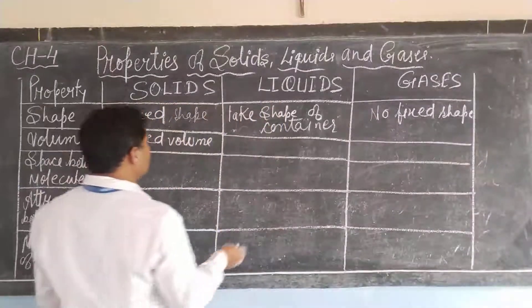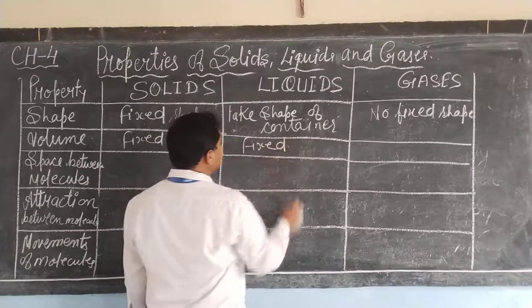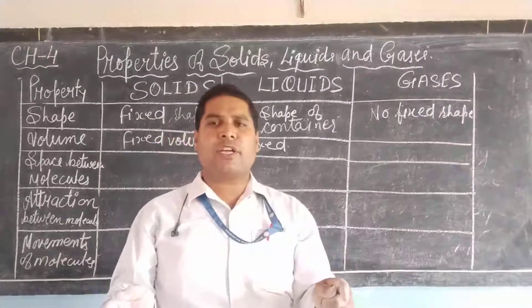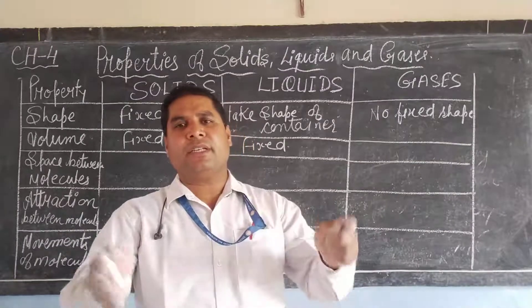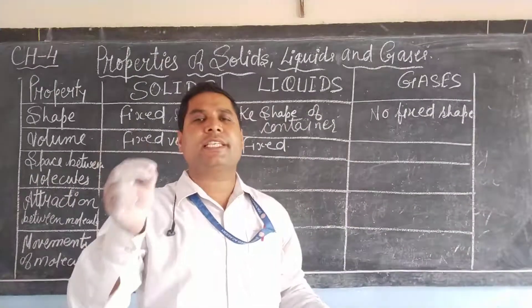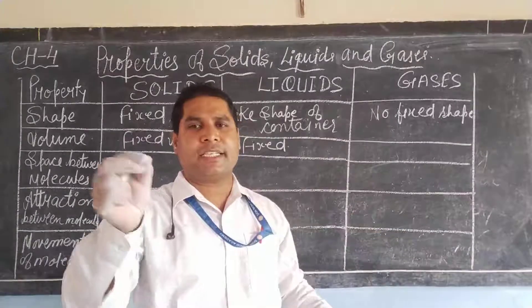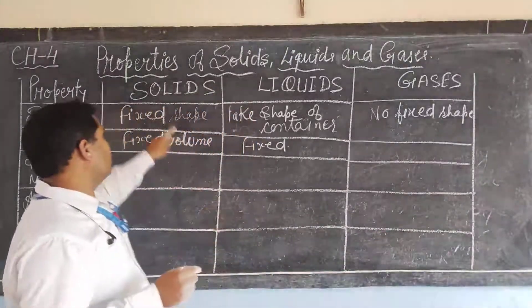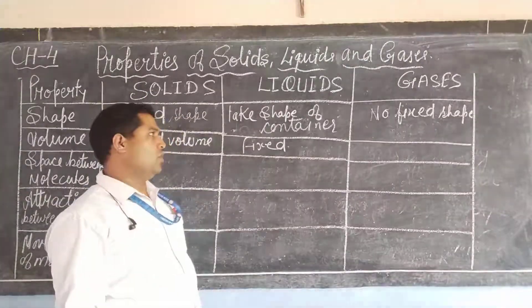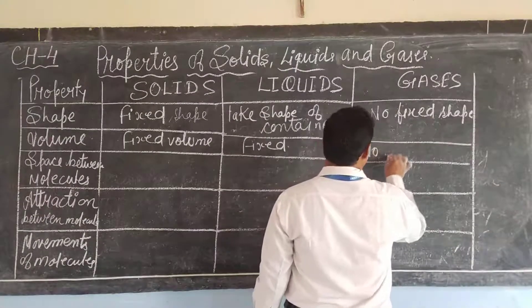Whereas liquid also has a fixed volume. Liquid also occupies the same space. Whether you keep it in a bottle, in a jug, or in any container, it will occupy the same space. The space occupied by a body is known as its volume. So solid and liquid have a fixed volume, whereas gases have no fixed volume.